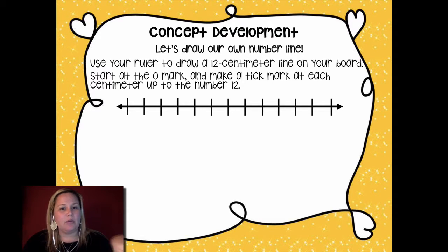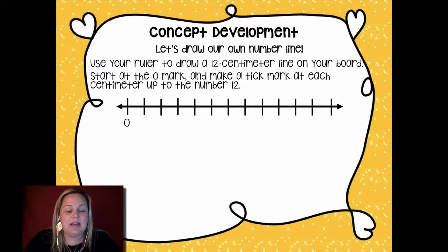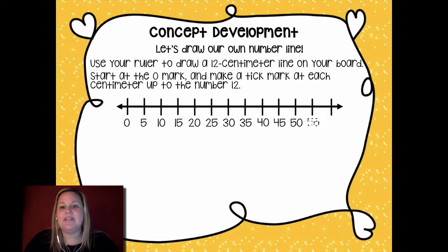Now that you've done that, you won't need your ruler. You can put that to the side. We're actually going to label this. So this is zero, five, 10, 15, 20, 25, 30, 35, 40, 45, 50, 55, and 60. I want you to label that on your number line as well.